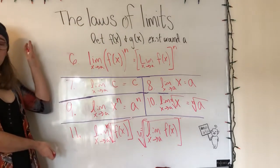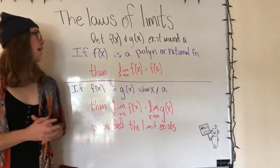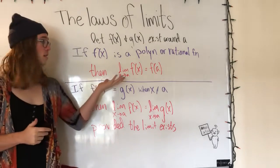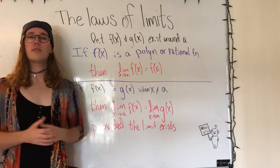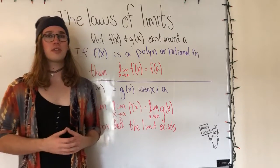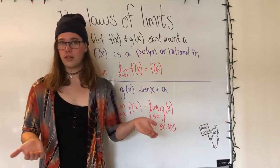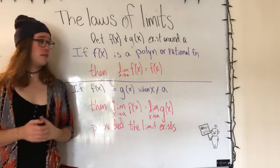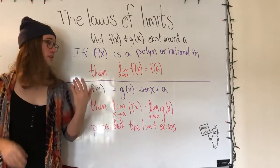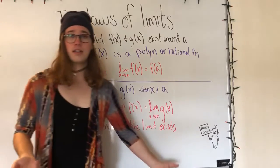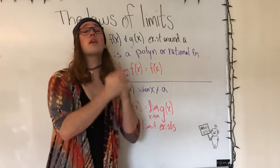To continue on, we have two more statements. If f of x is a polynomial or rational function, then the limit as x approaches a of f of x will equal f of a. This makes sense because if we have no domain restrictions, nothing could give us a non-number result, so our limit will approach the function value. Then if f of x equals g of x when x does not equal a, the limit as x approaches a of f of x equals the limit as x approaches a of g of x, provided that the limit exists.